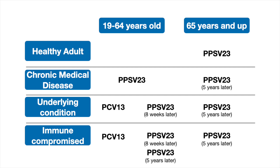If a patient is immunocompromised, the recommendation was to administer Prevnar-13 first, followed by Pneumovax at least eight weeks later, and then a second Pneumovax five years later — all within 19 to 64 years of age. At 65 and up, a third dose of Pneumovax would be given, again at least five years apart from the last Pneumovax administration.